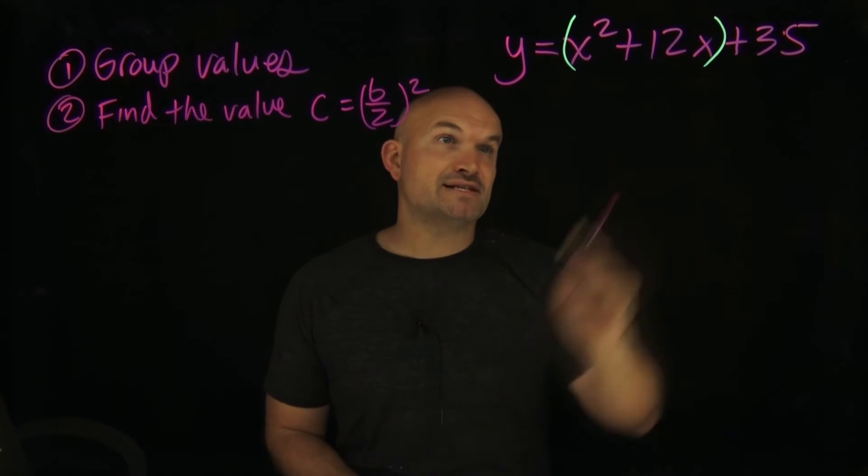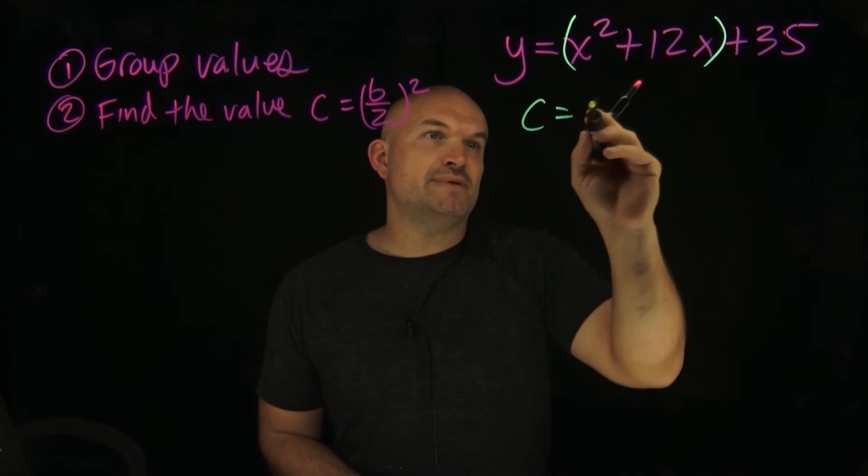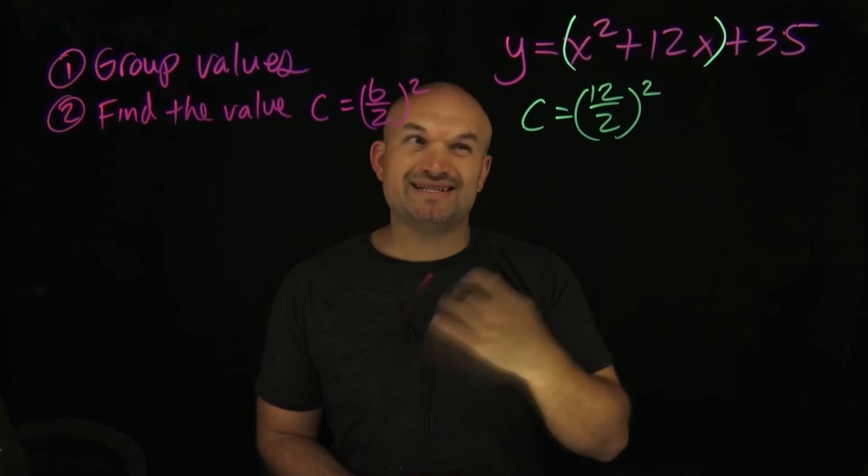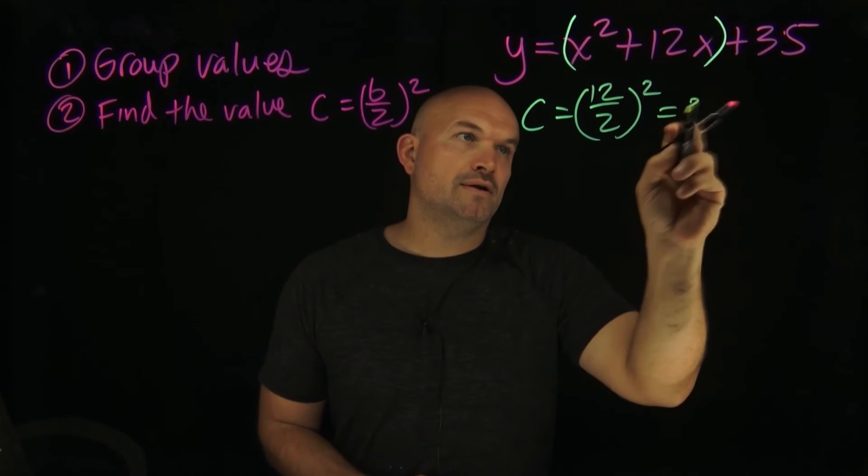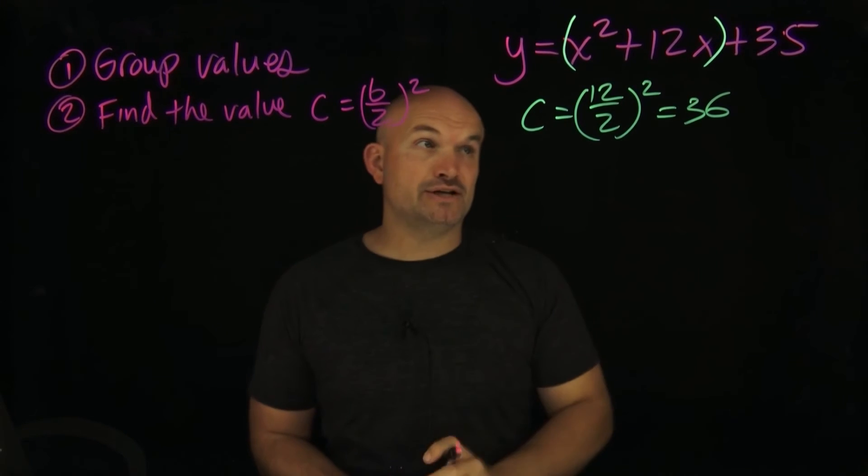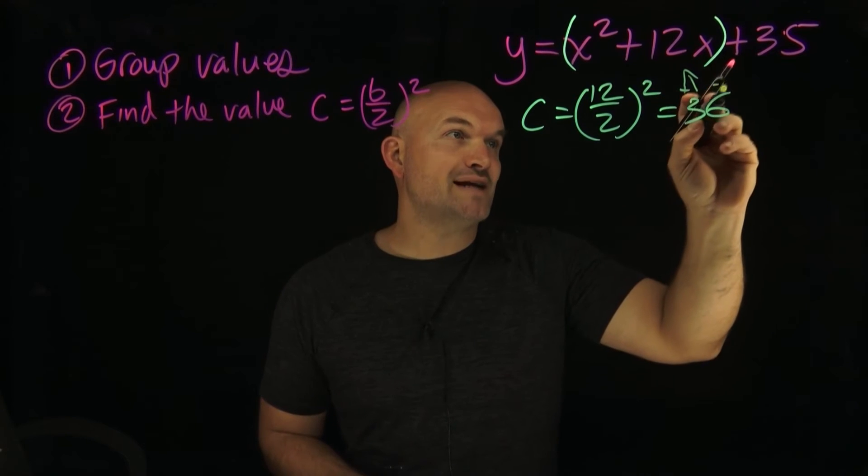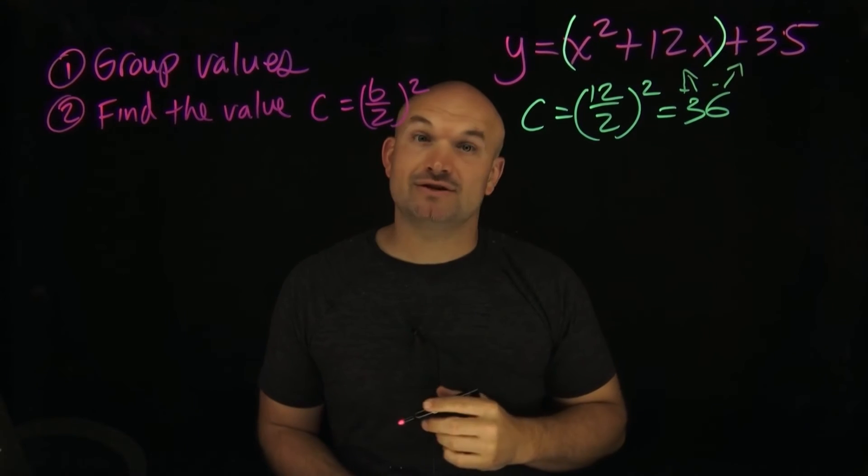So let's find our value c in this case. c is going to be 12 divided by two squared. So 12 divided by two is six. Six squared is going to equal 36. Now we're going to take this 36 and we're going to add it here and we're going to subtract it here.